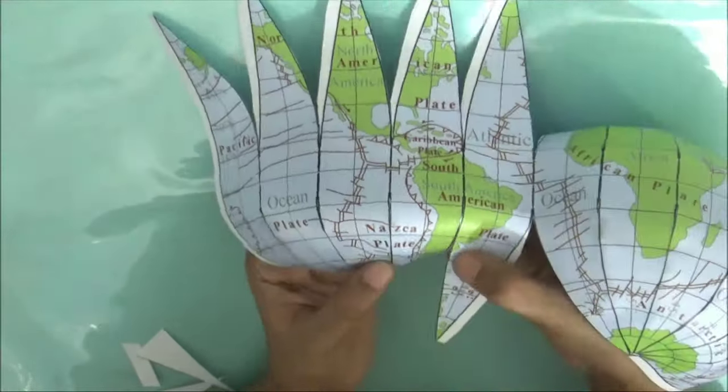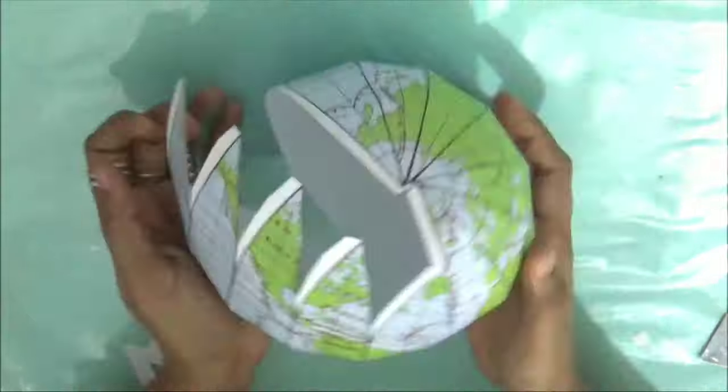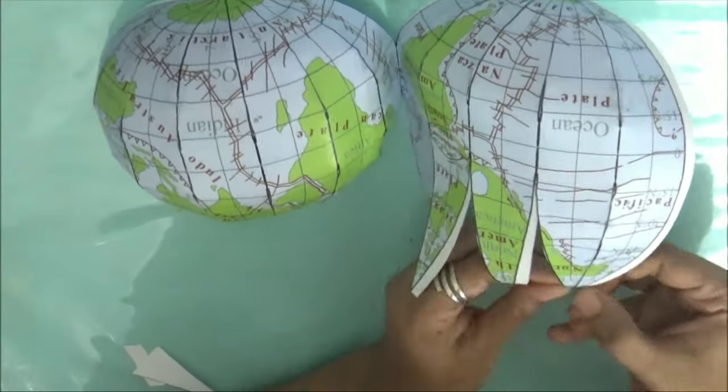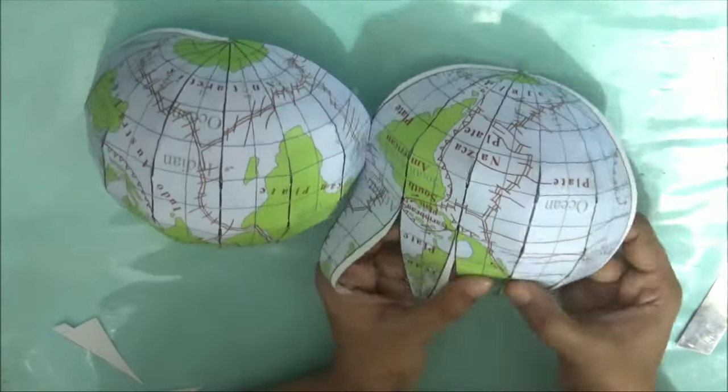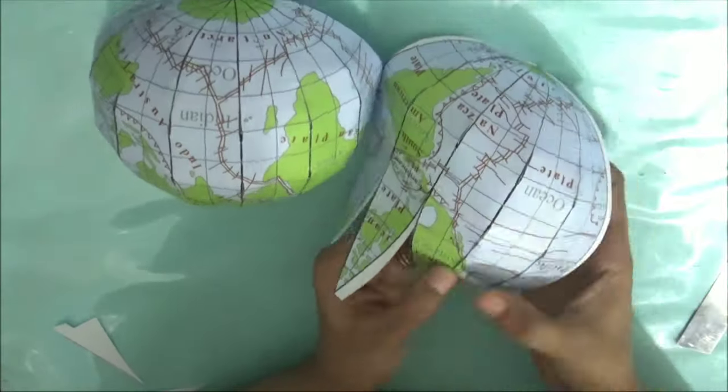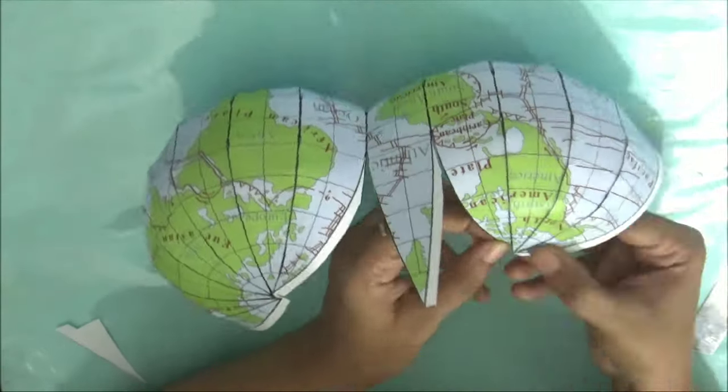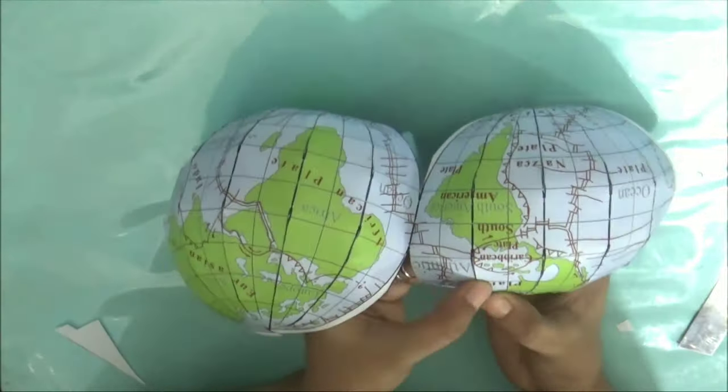Just by sticking the strips to one another, here I have completely got the two hemispheres, east and western hemispheres of the globe. After completing all the strips, I will be joining both the hemispheres and it will give me a complete globe.